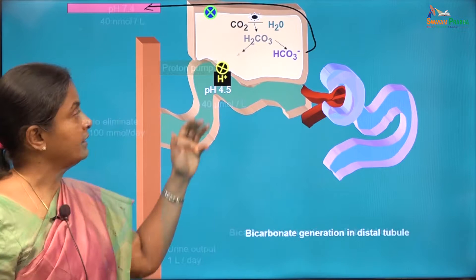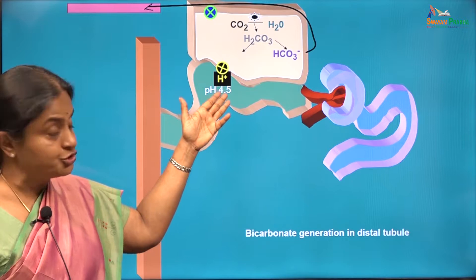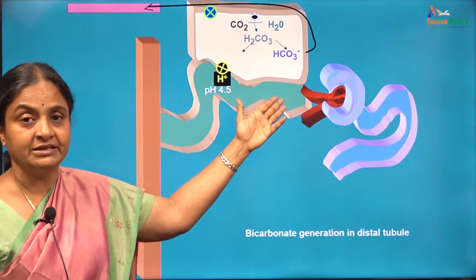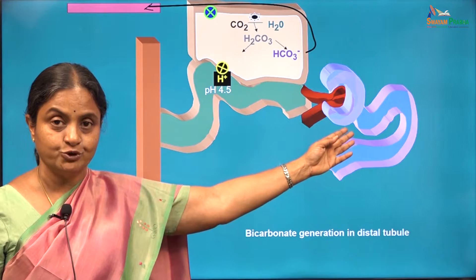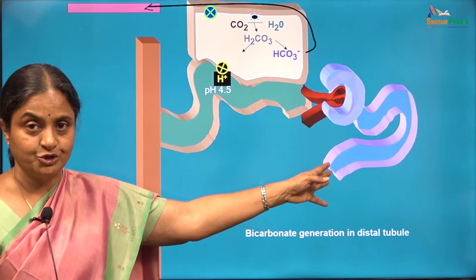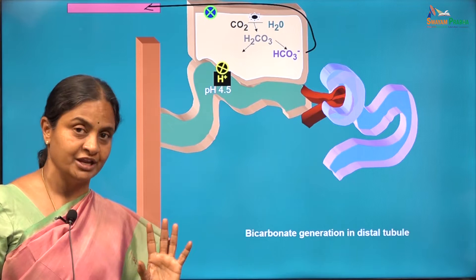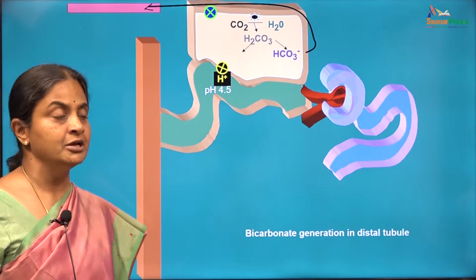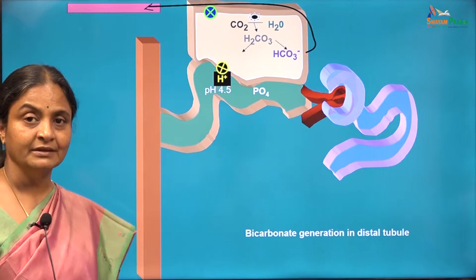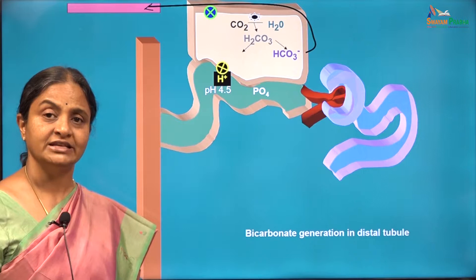If the proton pumps have to continue to extrude protons and the pH should not drop any further, there must be a proton acceptor in the distal tubular fluid. In the proximal tubular fluid we had bicarbonate as the proton acceptor, but all the bicarbonate has been reabsorbed in the proximal tubule. For all practical purposes, there is no bicarbonate that reaches the distal tubular fluid under normal circumstances unless the body needs to eliminate bicarbonate. So what is the proton acceptor in the distal tubular fluid?